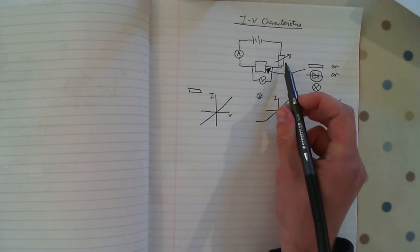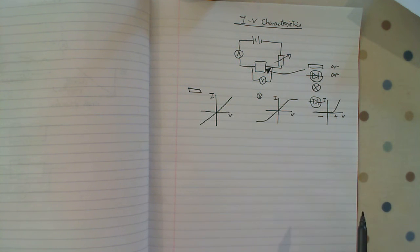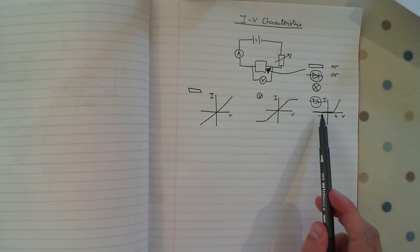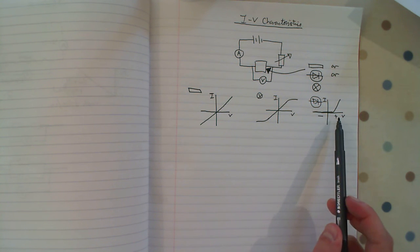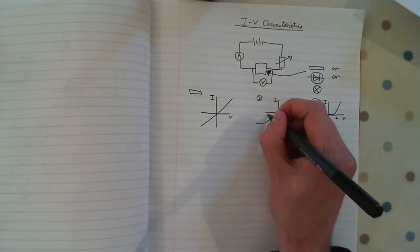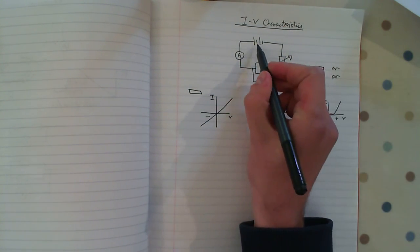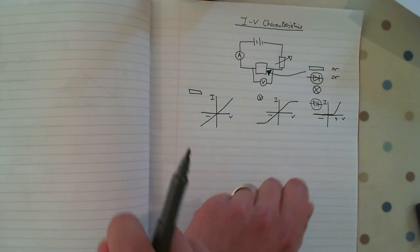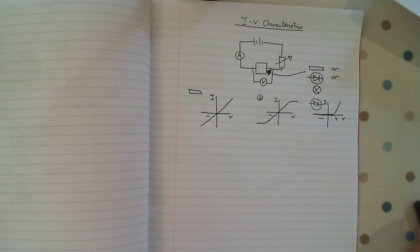And the reason why we use the variable resistor in this experiment is so we can get these variable potential difference values. If you want to get negative readings, what we do is we swap the power supply around, whether it's a power supply, cell, or battery, we just switch it over. And that is the IV characteristics required practical video. Thank you.